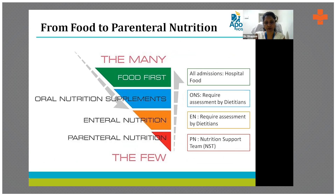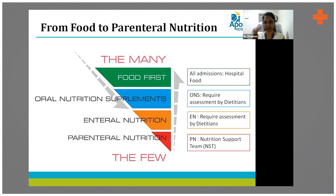If a patient is able to eat orally, food is the first option. Next comes oral nutritional supplements, then enteral nutrition — which is tube feeding — wherein the dietitian has to assess the patient, intervene, plan a target, and execute according to the prescription. The dietitian interprets the prescription into a feed. Finally, if the gut is non-functional, then you think about parenteral nutrition.